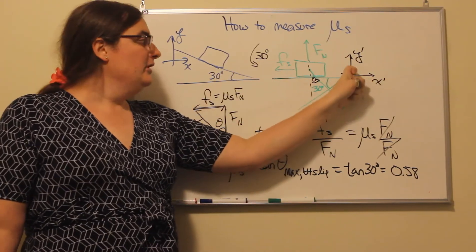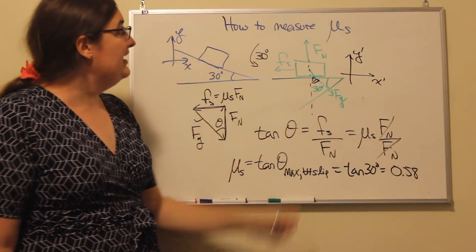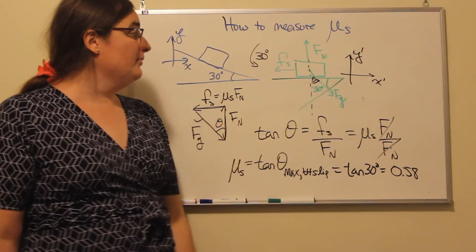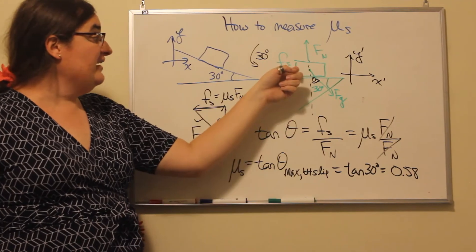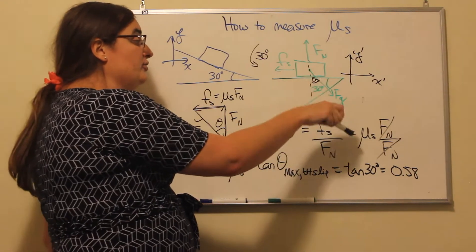So that means that our normal force is in our y prime direction, our static friction is in our negative x prime direction, and our force of gravity is going to be down into the right.